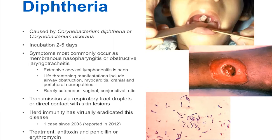I like to give a little bit of history when possible because it can be helpful to remember things. The name of the disease is from the Greek word diphtheria, which means leather hide, and it's very aptly named because it describes well the clinical manifestation. It was first described by Hippocrates in the 5th century BC, and there were epidemics described in the 6th century AD. The incubation period is usually 2 to 5 days, but can range from 1 to 10 days.